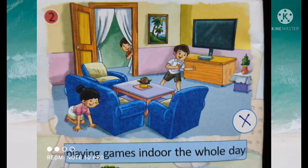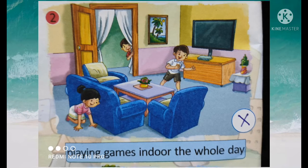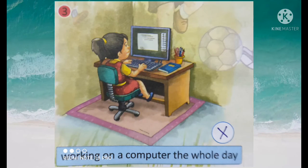The second picture shows playing indoor games the whole day. This activity is wrong — you can cross it. The third picture shows working on a computer the whole day, which is also a wrong activity.